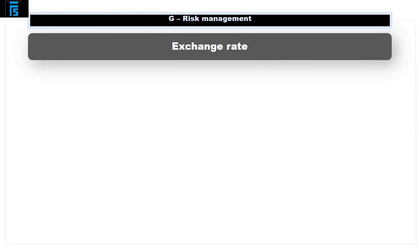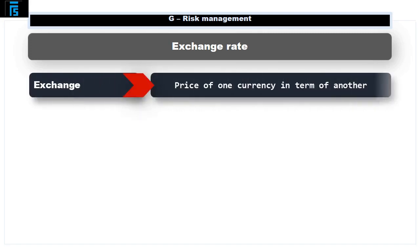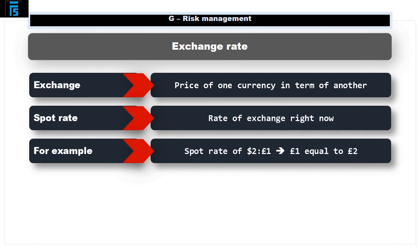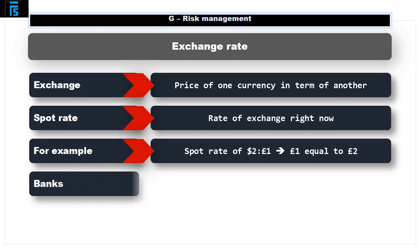Initially let's be clear how an exchange rate works. An exchange rate is simply the price of one currency in terms of another. A spot rate just means the rate of exchange right now. For example, a spot rate of exchange of $2 to £1 means that £1 sterling has an equivalent value of $2. This means I could exchange £1 for $2 or $2 for £1.